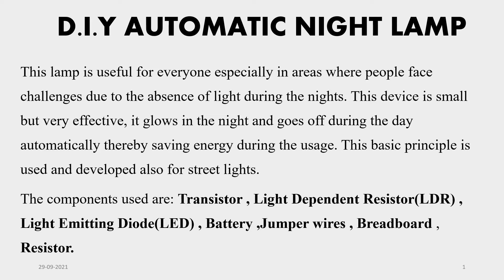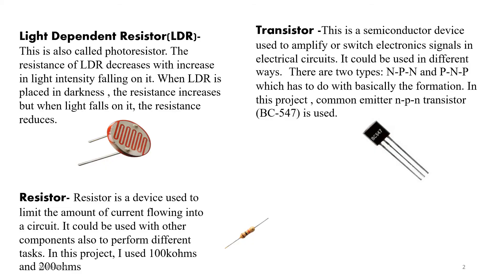The components used are: transistor, light dependent resistor (LDR), light emitting diode (LED), battery, jumper wires, breadboard, and resistors. The light dependent resistor is also called the photo resistor. The resistance of the LDR decreases with an increase in light intensity falling on it — when light falls on the LDR there is a decrease in resistance, and when the LDR is placed in darkness the resistance increases. We have different types; it is advisable to get a bigger one for good sensitivity.